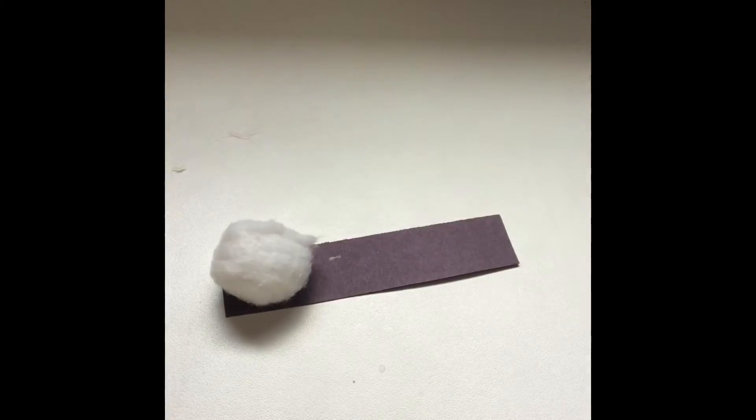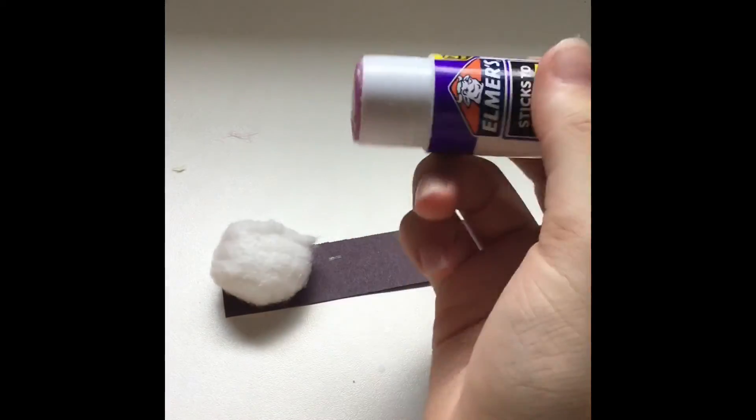I suggest gluing it, taking your glue and gluing the cotton ball to the paper first before you roll it so it'll just stay down.